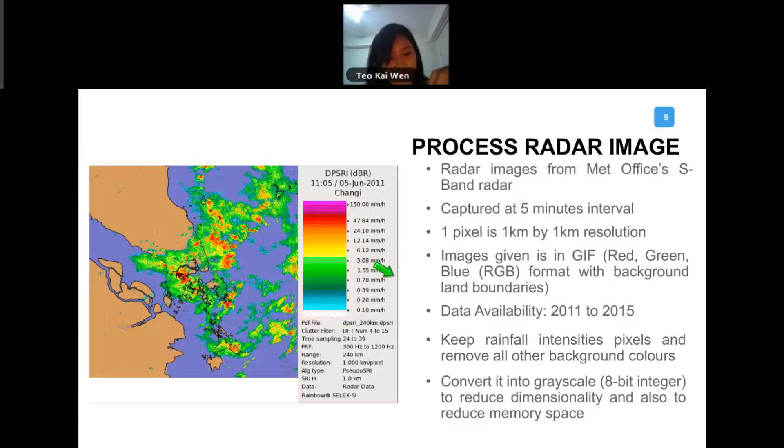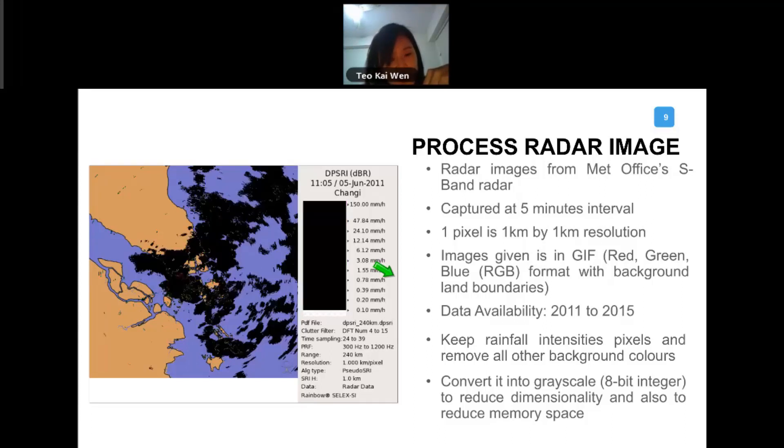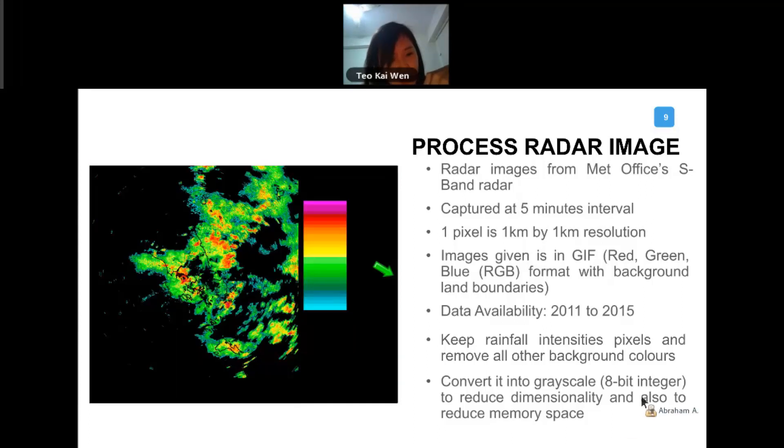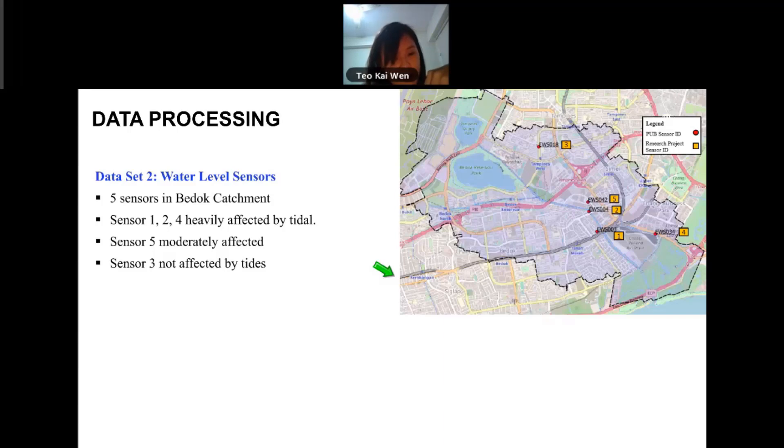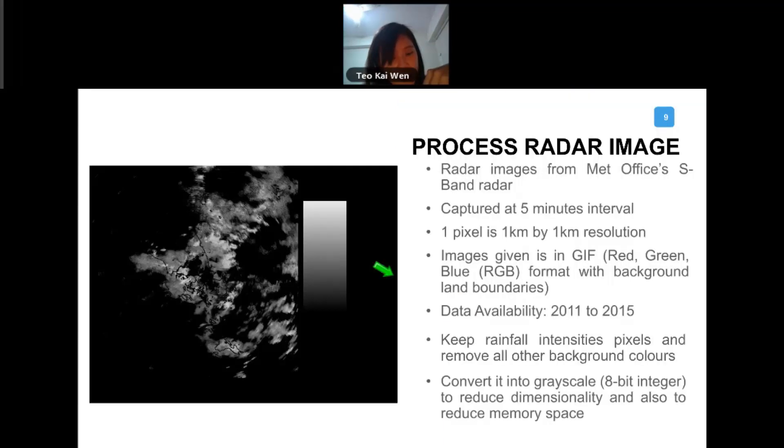What we wanted to do is to keep the rainfall intensities and the pixels. We want to remove all other background colors - this is not important to us. We wanted to convert it to grayscale image to reduce the memory space. This is what we do: we pick out what is relevant to us and then convert it to grayscale image, something like that, and then we trim it.